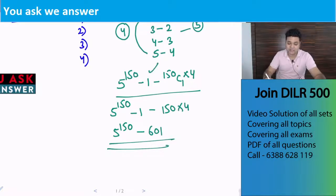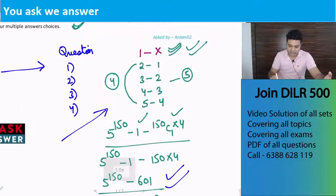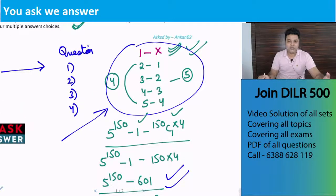In this we subtracted those two cases in which he didn't attempt any or attempted exactly one. Apart from this, in all other cases he would have attempted at least 2. So that is your answer. I hope this question is clear. And many questions come in this manner, you should be able to understand this way of creating number of ways for each question.